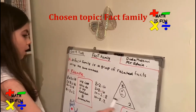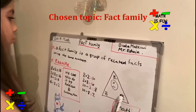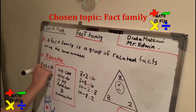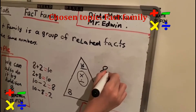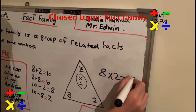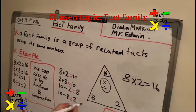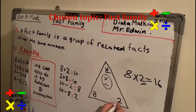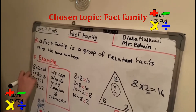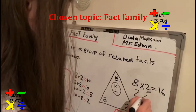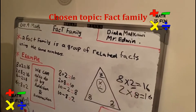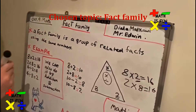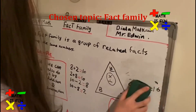Here, for example, there are 3 digits. We have 8 and 2 and the product is 16. Here we have 8 times 2 equals 16. So we will write it 8 times 2 equals 16. And here we switch the 2 factors: 2 and 8.